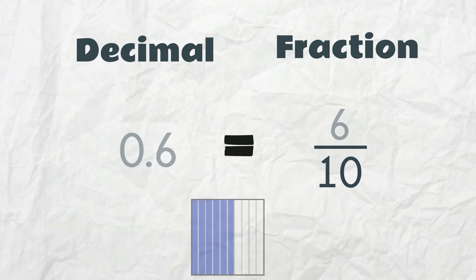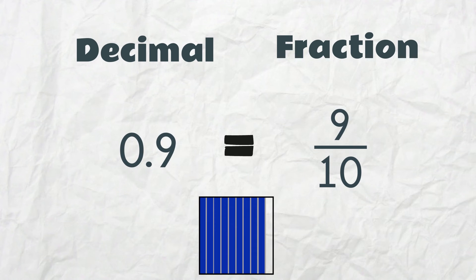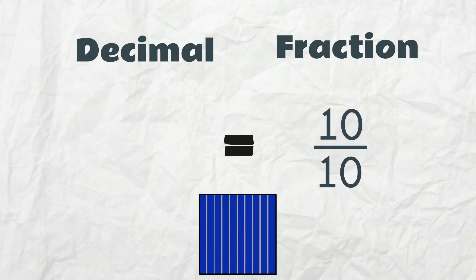6 tenths, 7 tenths, 8 tenths, 9 tenths. After 9 tenths, we have 10 tenths, which we know is just one whole.